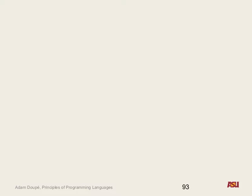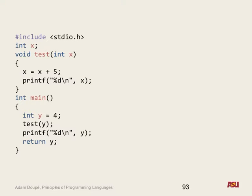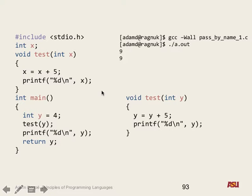Somebody want to do pass by name? What it does is it takes all the formal parameters and passes in the textual representation of whatever it was. So it replaces every instance in the function with the text of whatever the parameter was that was passed in. It does not invoke and resolve what that expression is until it's used in the body. In this example, it's exactly like pass by reference - we've replaced every instance of x with y, and it outputs 9 and 9.